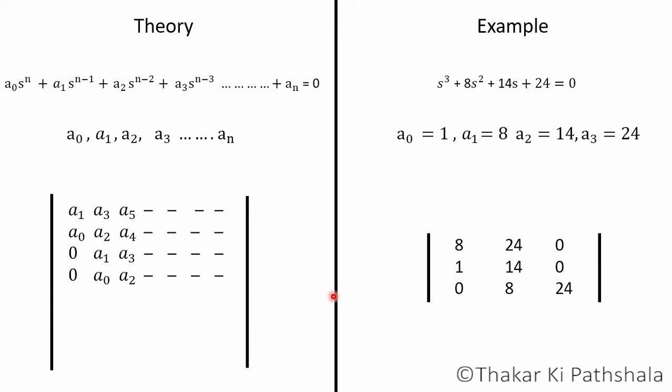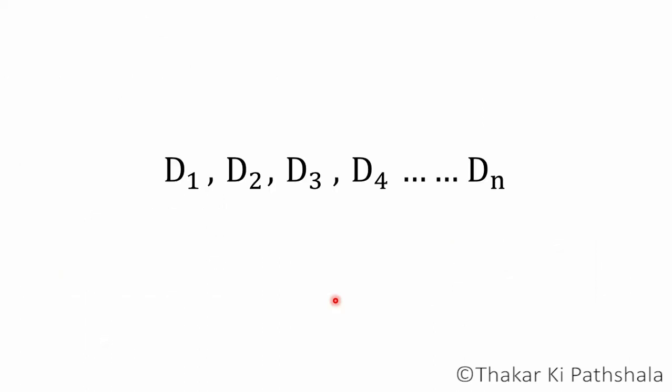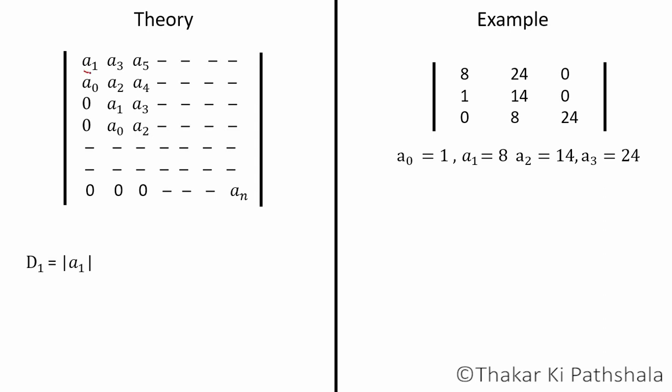Once we have formulated the Hurwitz determinant, then our goal is to find out the solution whether the system is stable or not. To determine that, we have to find D₁, D₂, D₃, which are called as sub-determinants. Value of D₁ is nothing but the value of first digit of the first row, which is a₁, which in case here is 8. So value of D₁ is 8.